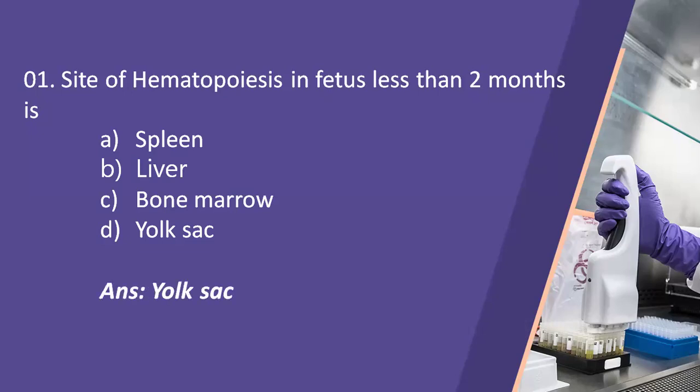Hematopoiesis means formation of blood cellular components. Yolk sac produces blood cells in the fetus less than two months. After two months, liver and spleen produce blood cells. And in adults, bone marrow produces blood cells.